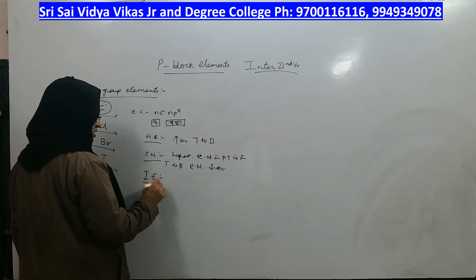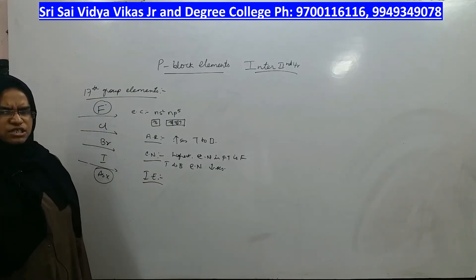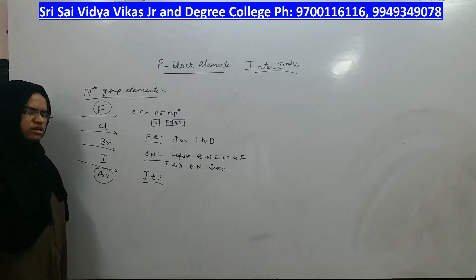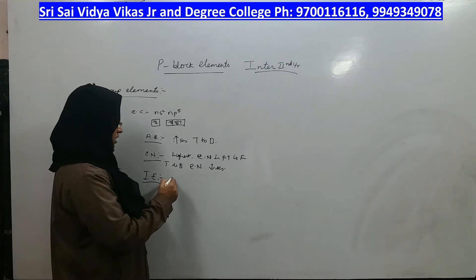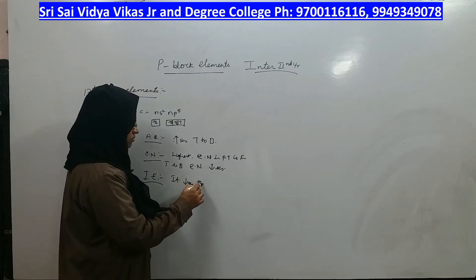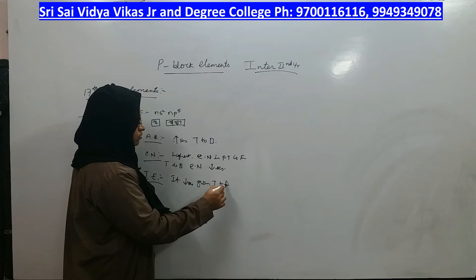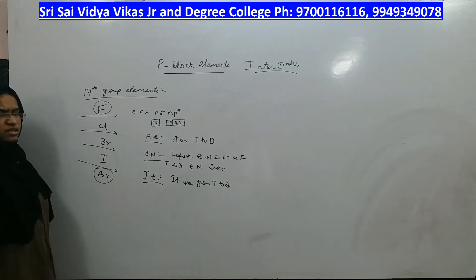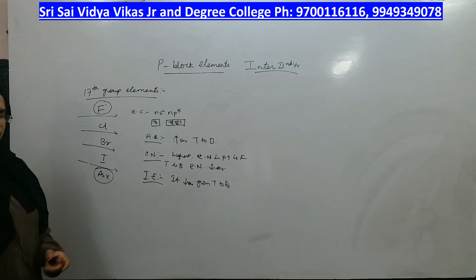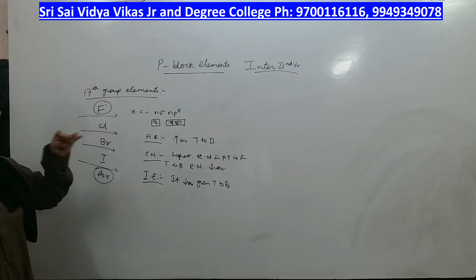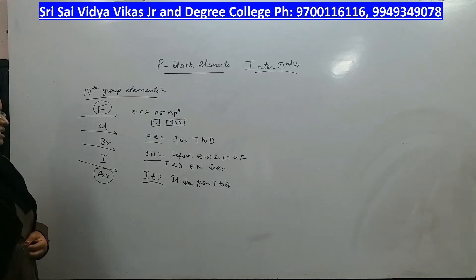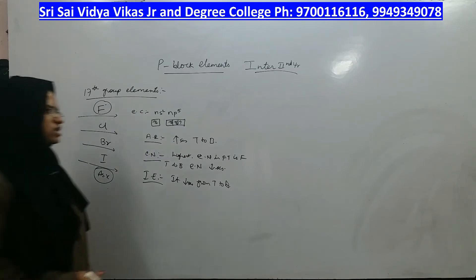What is the next property? Ionization energy: since atomic radius increases from top to bottom, ionization energy decreases from top to bottom, and fluorine has the highest ionization energy. What about electron gain enthalpy? Electron gain enthalpy refers to the energy released after gaining an electron, and it is very high for halogens.